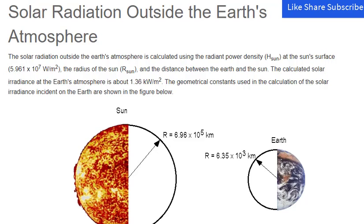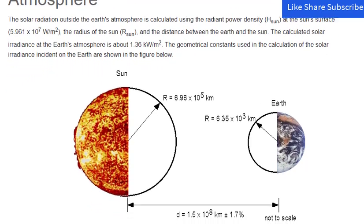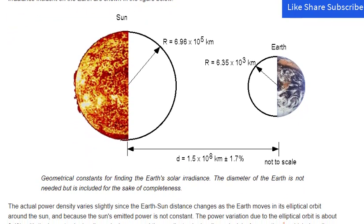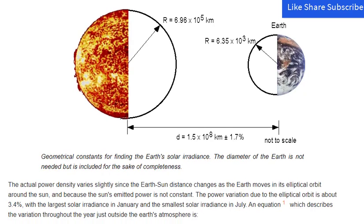The solar radiation outside the Earth's atmosphere is calculated using the radiant power density at the Sun's surface, the radius of the Sun, and the distance between the Earth and the Sun. The calculated solar irradiance at the Earth's atmosphere is about 1.36 kilowatts per square meter.